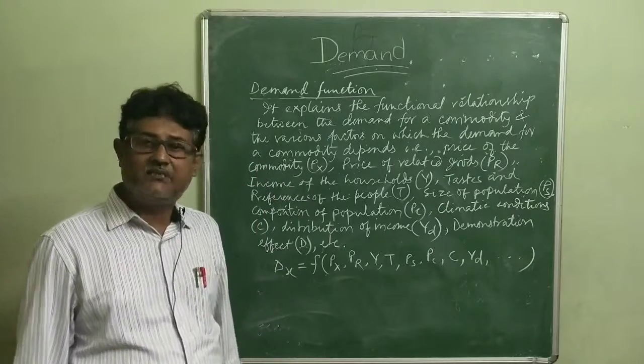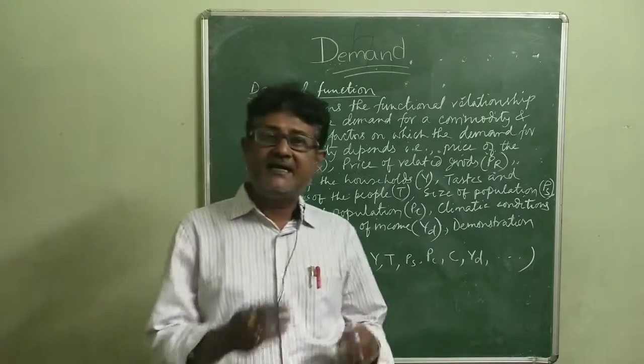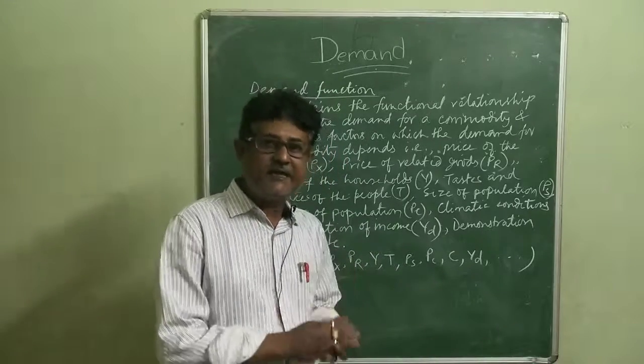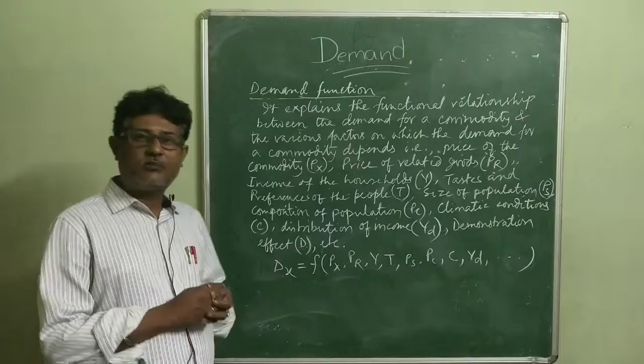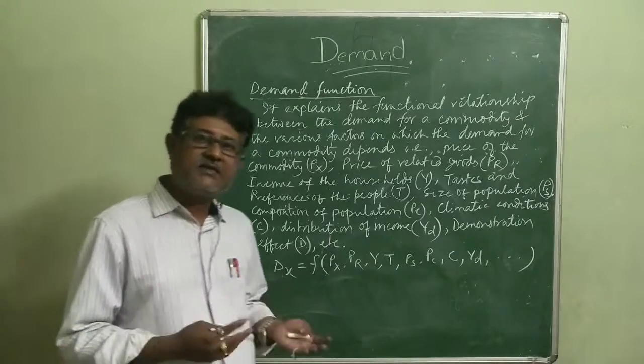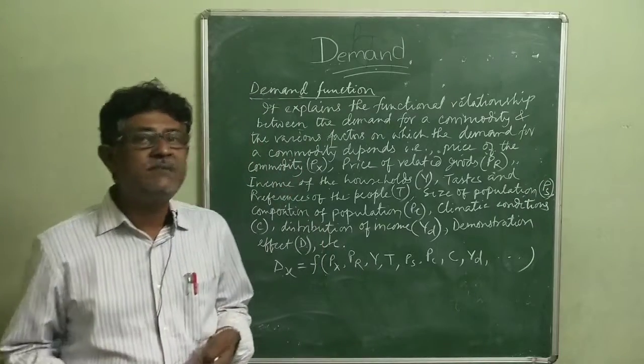You will know that the demand for a commodity depends upon its price, that is, the price of the commodity, the prices of related goods. The related goods may be a substitute good or a complementary good.